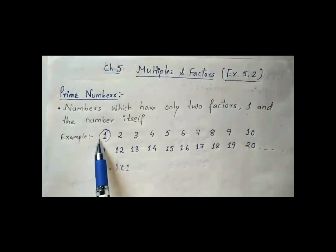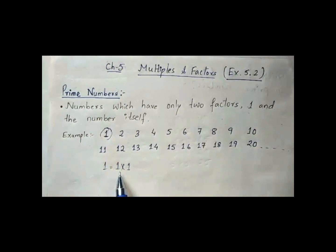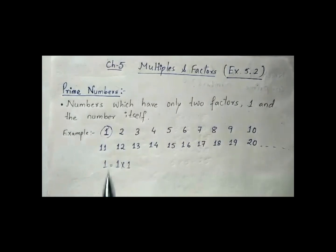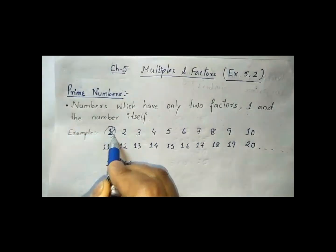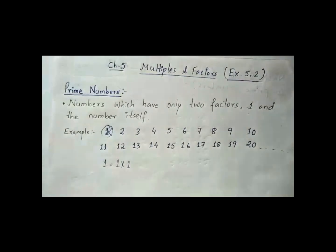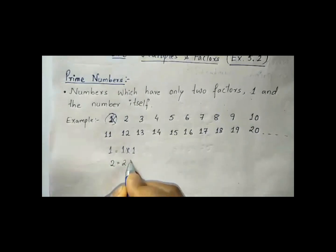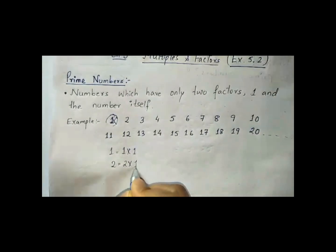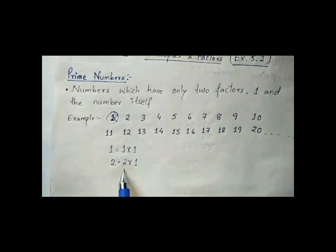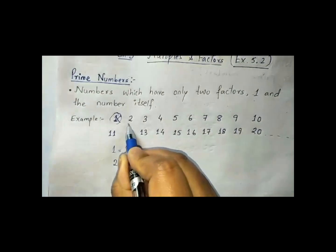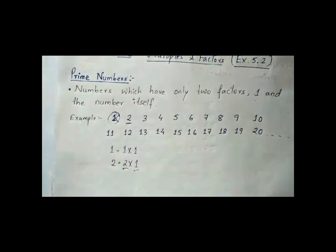Now, one — one has how many factors? One has only one factor, so one is not a prime number. Two — two has how many factors? Two has two factors, that is two and one. So two is a prime number.